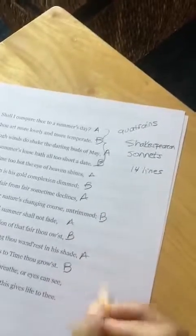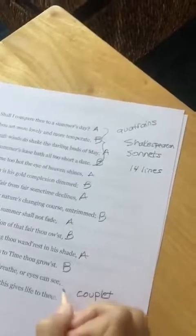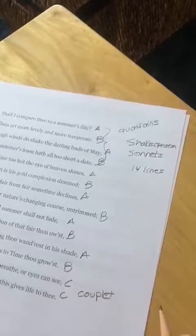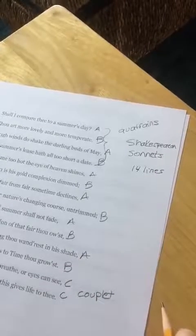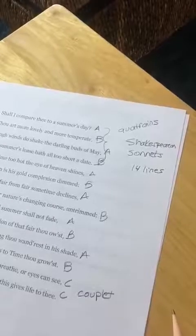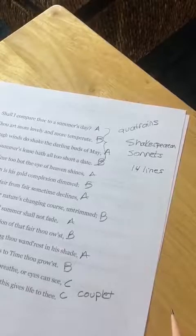And then at the end, we have what's called a couplet. And the couplet rhymes. The two lines in the couplet usually rhyme. So this is the basic kind of format of a Shakespearean sonnet.